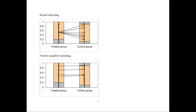Kernel matching: for each treated observation, use all control observations, weighting them so that those closer in propensity score receive higher weights and those farther away receive lower weights — producing a weighted average. Nearest neighbor matching: for each treated observation, select the single control observation with the closest propensity score.